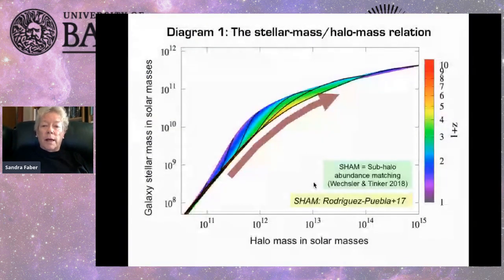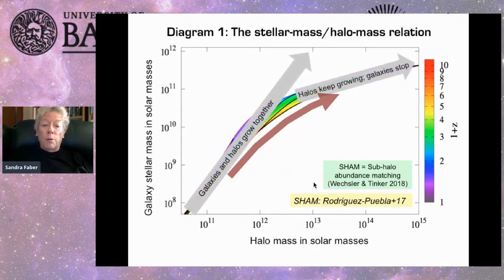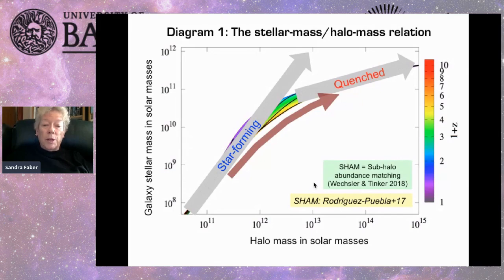Here is the first diagram: the stellar mass-halo mass relation. The y-axis is stellar mass, x-axis is halo mass. This scaling law shows galaxies and halos evolving along it. Note the change in slope: at early times, galaxies and halos grow together. Later, halos keep growing but galaxies stop — that is the quenching process. These two arrows — star-forming and quenched — describe the very process we are trying to understand.